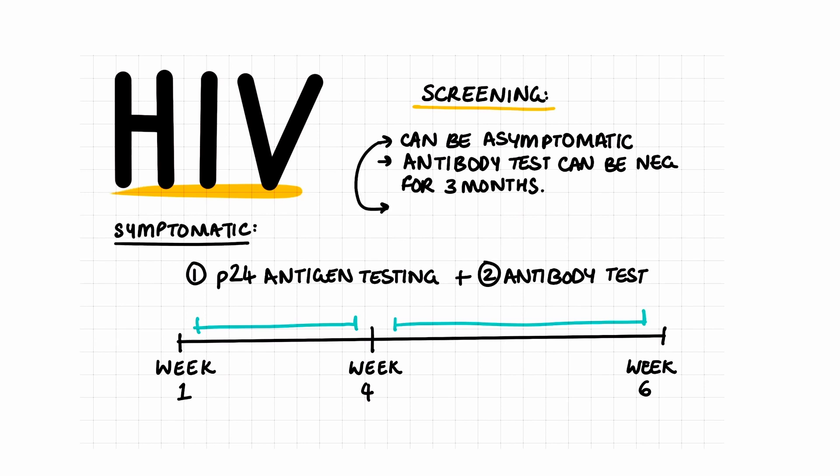If a patient is asymptomatic and HIV is suspected, then testing is done four weeks after the potential exposure. If they have negative results, they are tested again at 12 weeks.